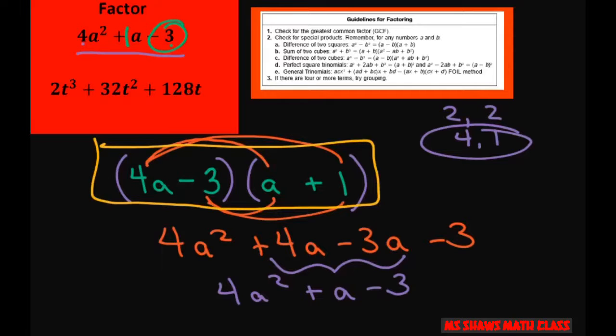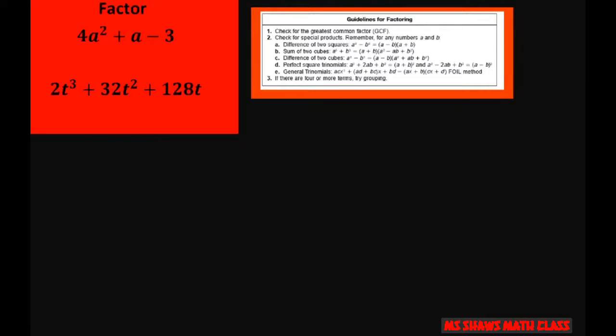Now the second one, we're going to first have to use our guidelines for factoring and check for the greatest common factor. I can divide each of these pieces by t, and also 2. So instead of losing the divisor, just pull it out. That's your greatest common factor. And you're left with t² + 16t + 64.